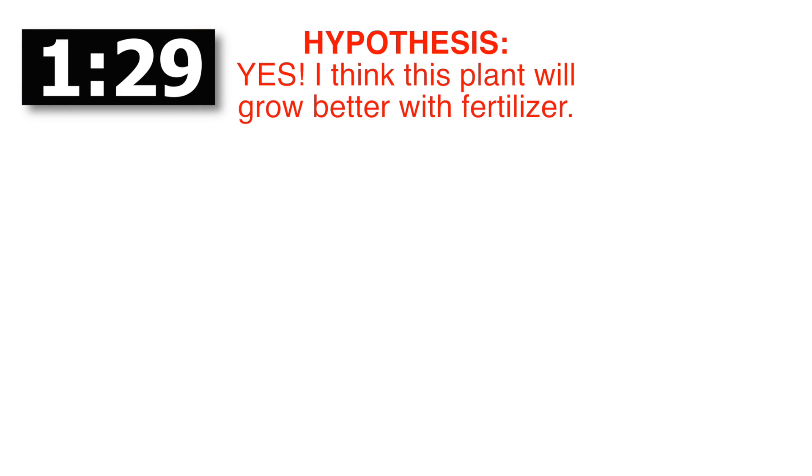Starting with stating our problem — what do we want to investigate? Let's say we have a plant and think it will grow better with fertilizer than without. We research fertilizers and plants to see if there's an effect. After researching, we form a hypothesis. Based on my research it claims fertilizer helps, and I think it will, but I haven't verified it myself through my own experimental design. So my hypothesis is: yes, this plant will grow better with fertilizer.